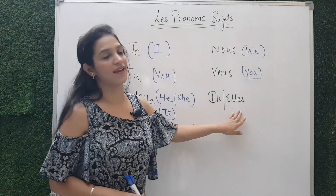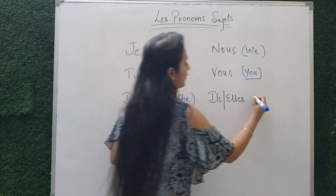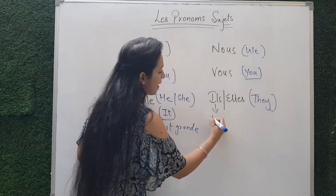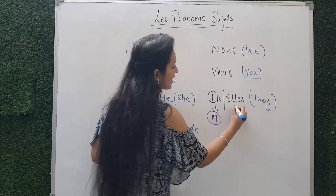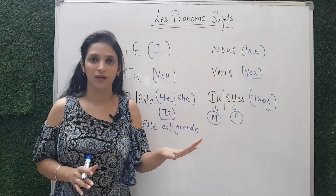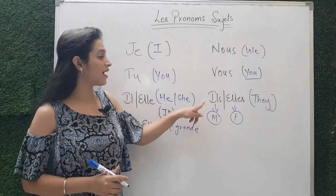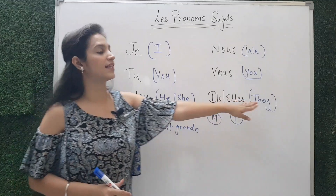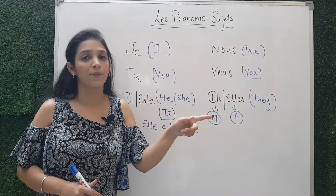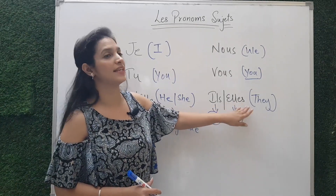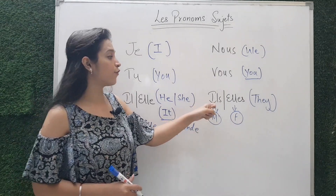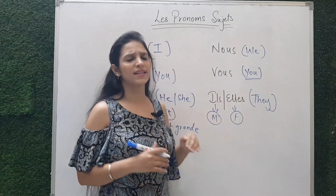Next are ils and elles — both mean 'they.' Ils is the masculine form and elles is the feminine form. When there are only boys in a group, we say ils. When there is a group of girls, we use elles — e, double l, e, s.